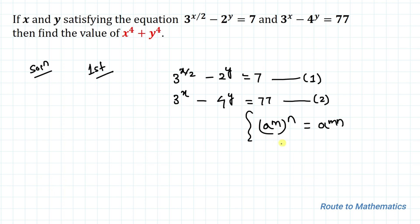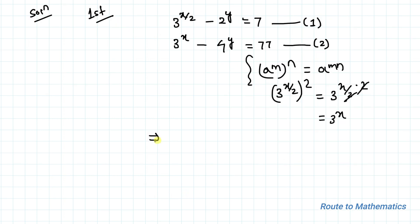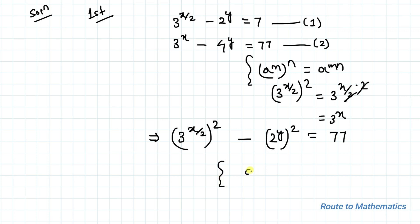In the first step, we write 3^x as (3^(x/2))², since (3^(x/2))² = 3^x. So from equation 2, we can write (3^(x/2))² − (2^y)² = 77.